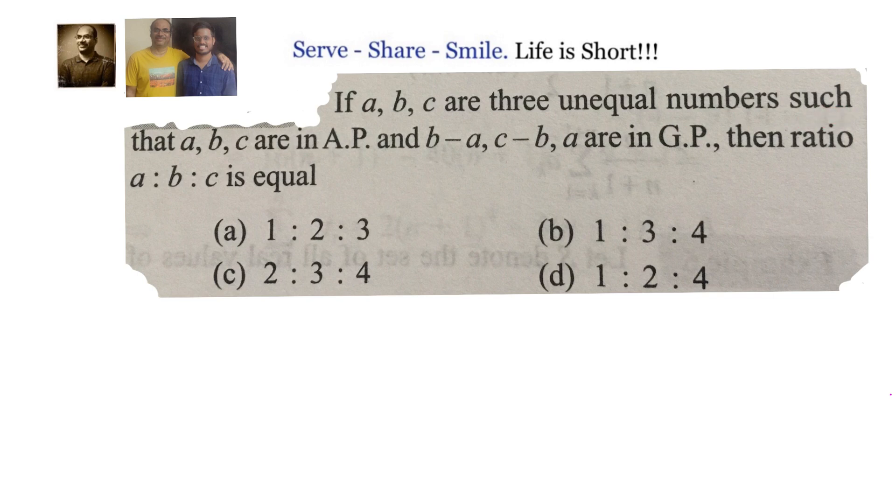Let us look at this problem related to arithmetic progression and geometric progression. If A, B, C are three unequal numbers such that A, B, C are in AP and B minus A, C minus B, A are in GP, then what is the ratio of A is to B is to C?